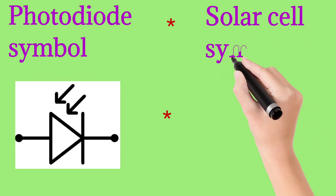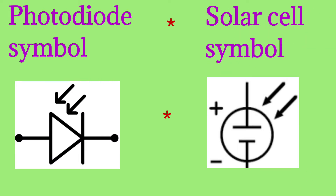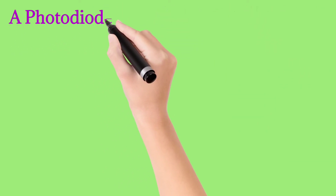Now see the difference points. First, the symbol difference: in a photodiode, light is incident on a general diode, and in a solar cell, sunlight is incident on a cell with positive and negative terminals. So there is a symbol difference.